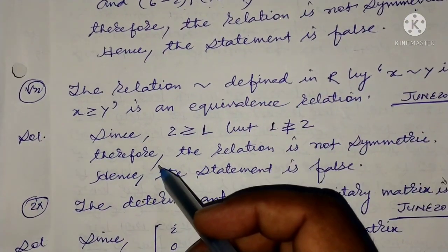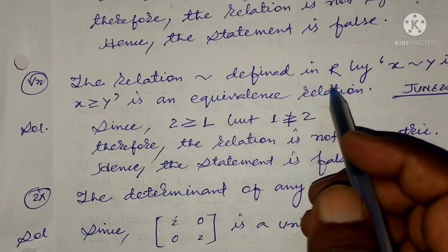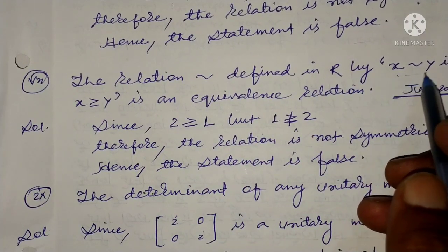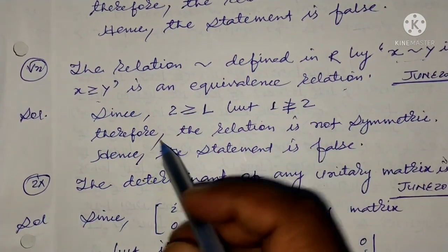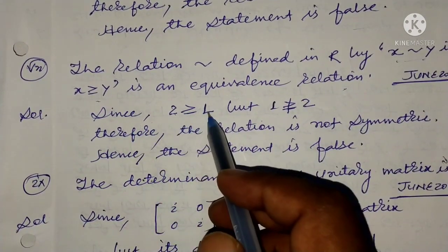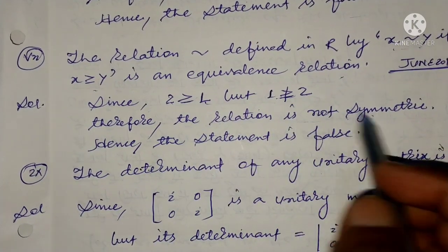The relation defined in R by x ~ y if x ≥ y is an equivalence relation. Since 2 ≥ 1 but 1 is not greater than or equal to 2, therefore the relation is not symmetric. Hence the statement is false.